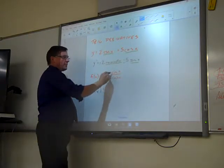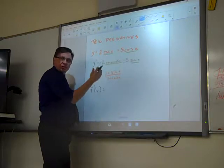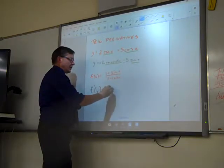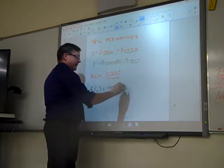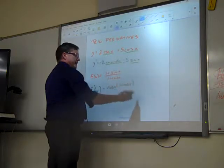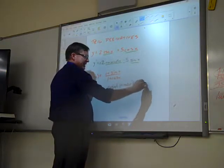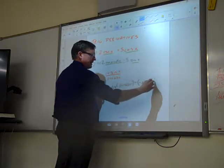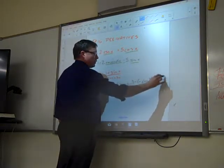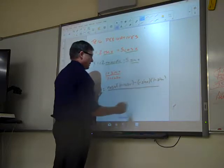So I look at the top, 1 plus sine x, and the derivative of 1 is 0, the derivative of sine x is cosine x, times the bottom minus derivative of the bottom, derivative of cosine is negative sine, times the top all over the bottom squared.